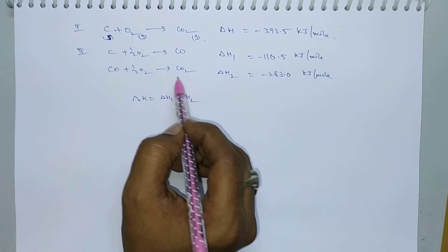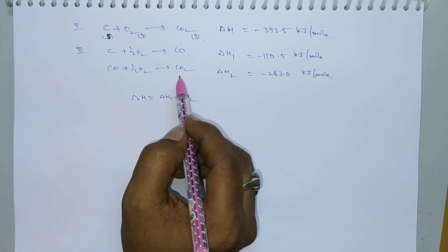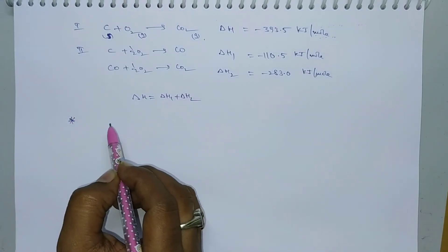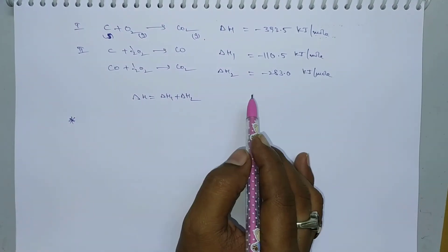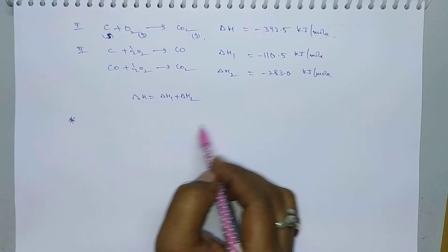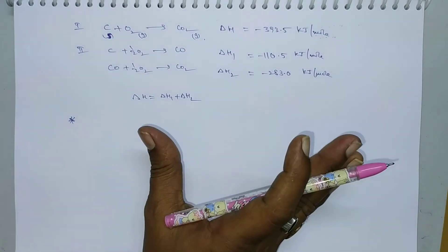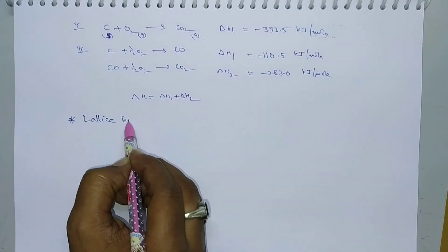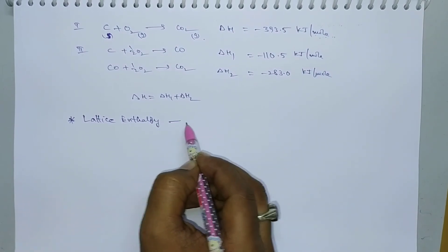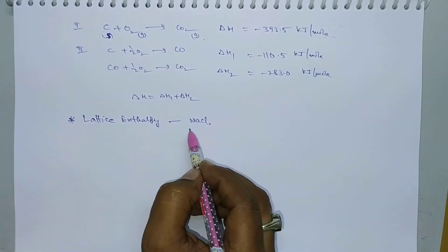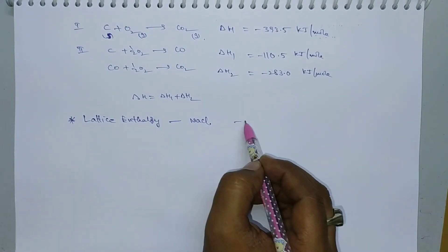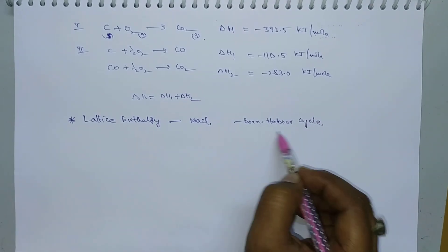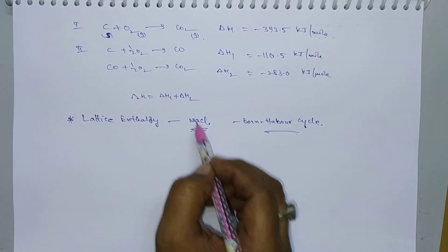Hess's Law is also helpful for calculating lattice enthalpy. One of the most important applications is the calculation of lattice energy of any crystal using this law. For example, the lattice enthalpy of sodium chloride crystal can be calculated using the Born-Haber cycle, which is based on Hess's Law.